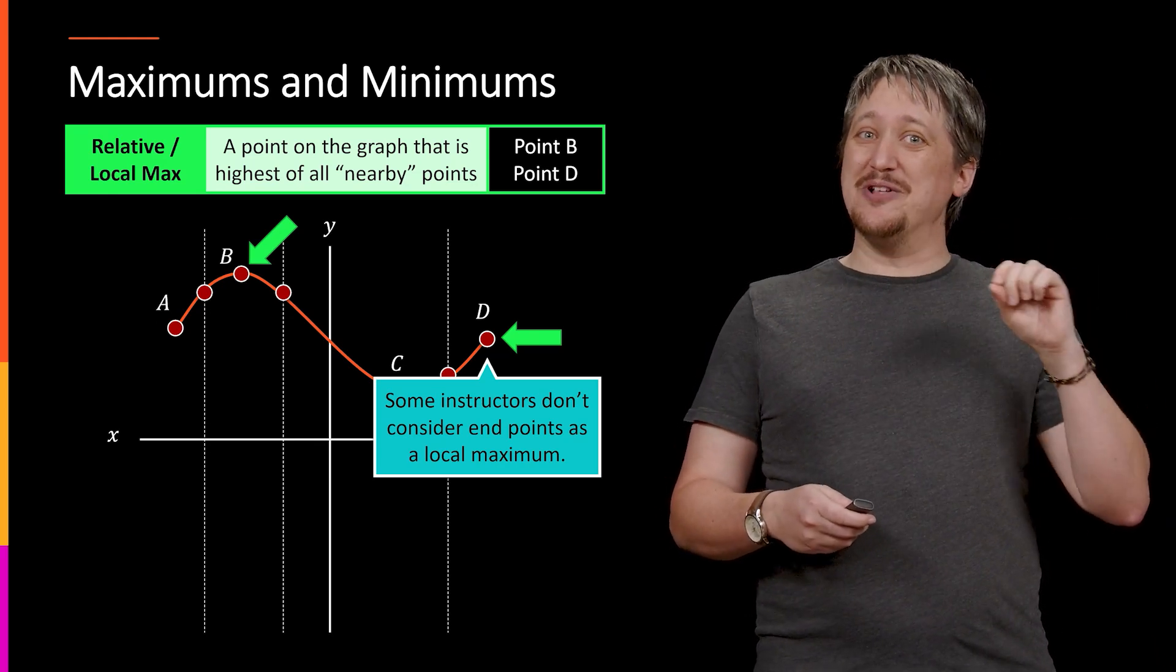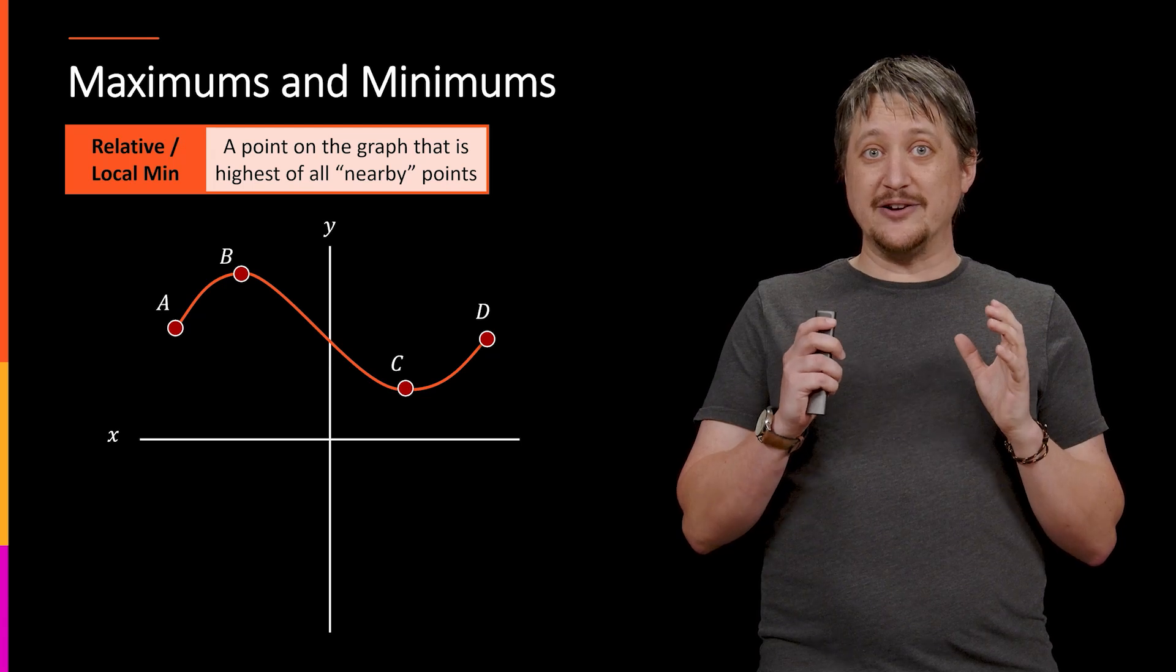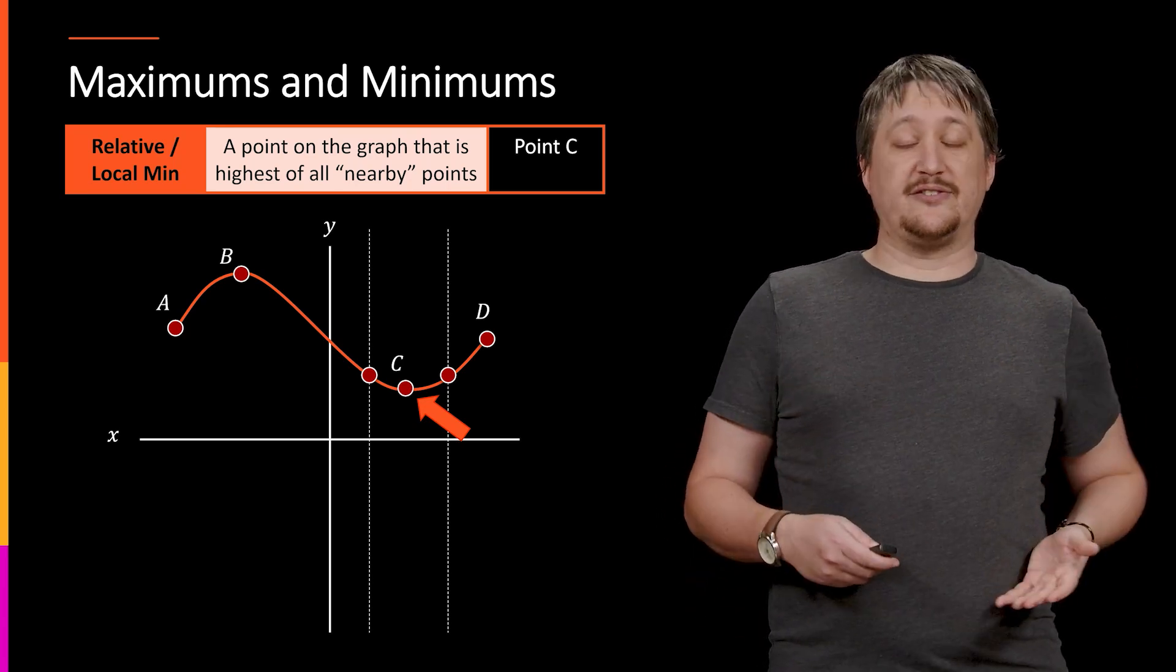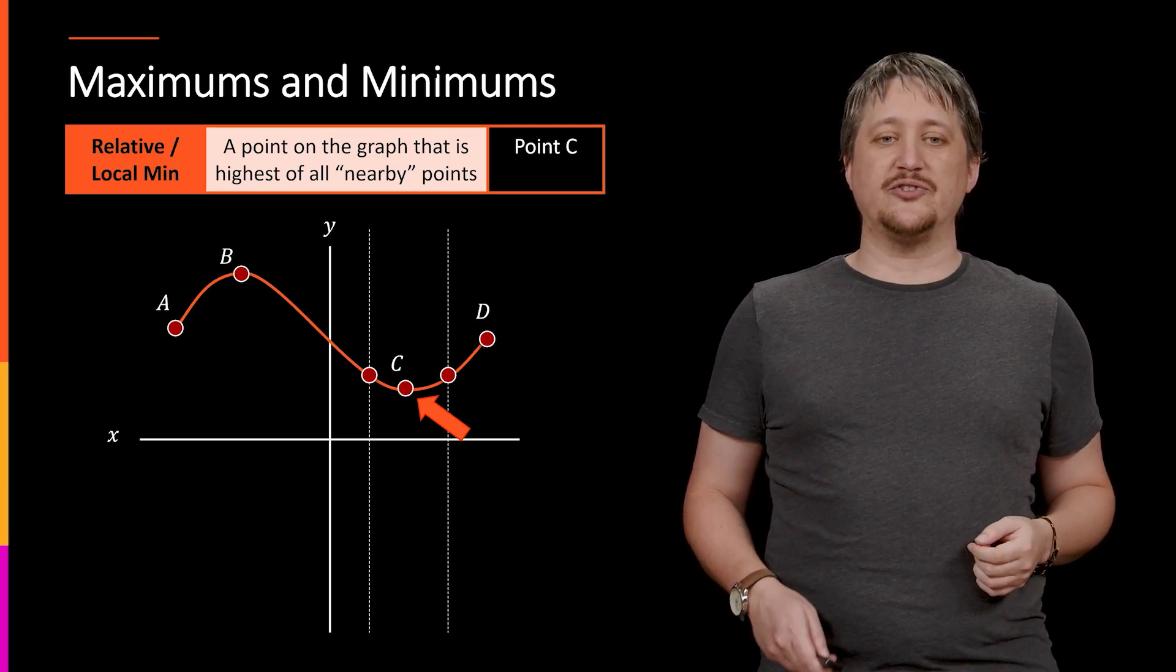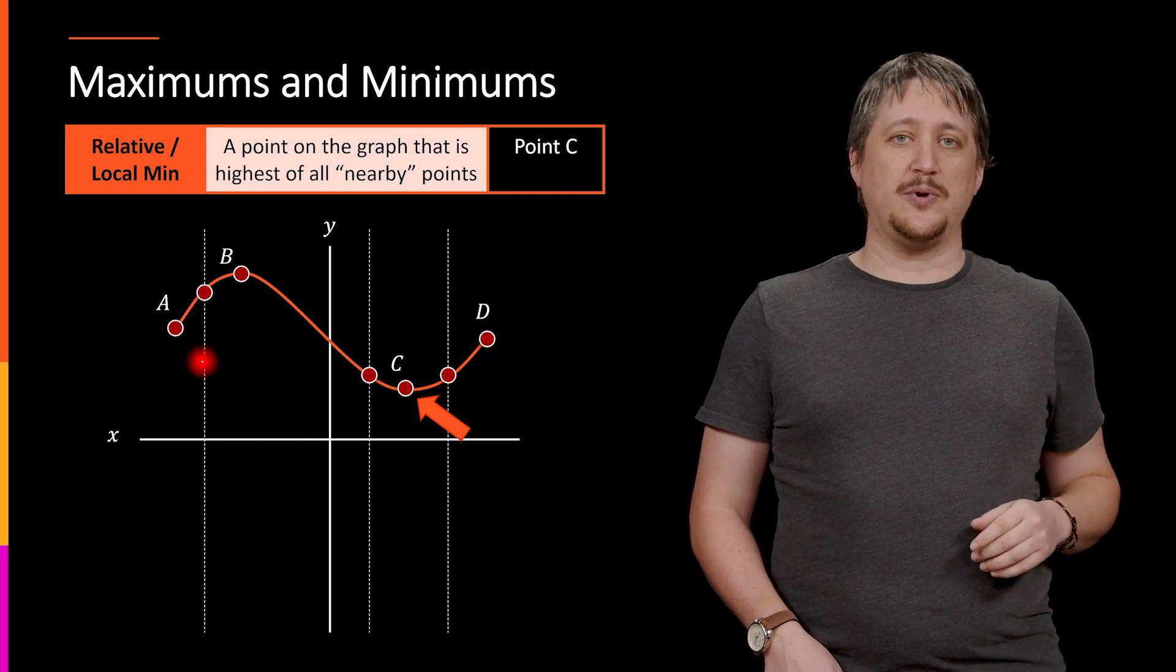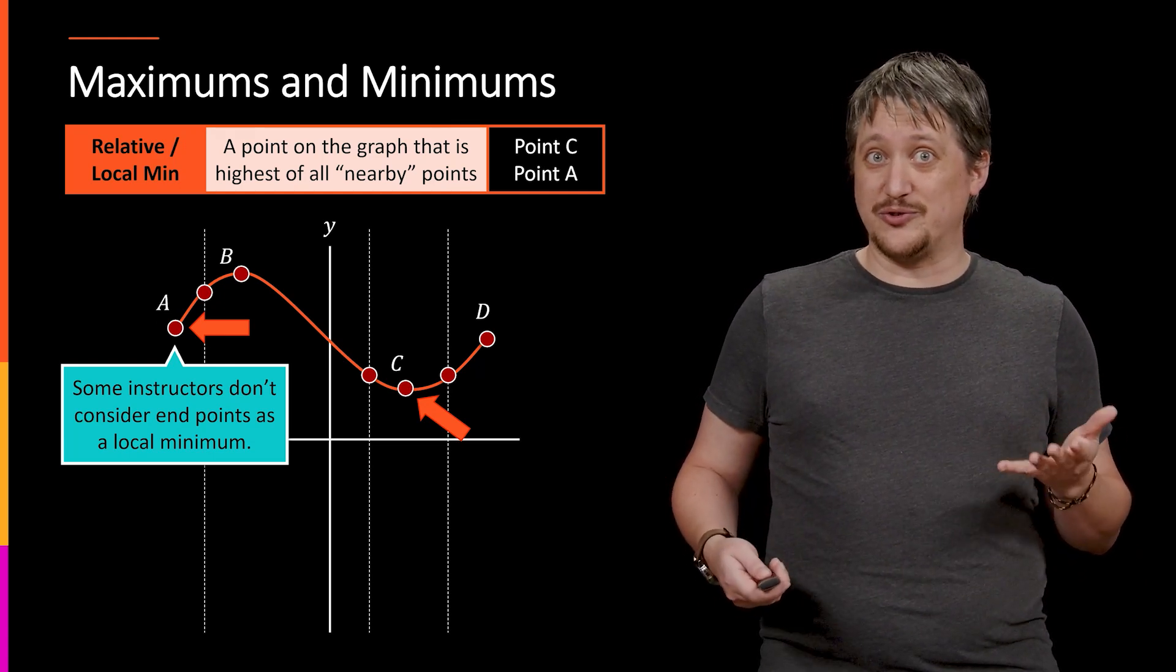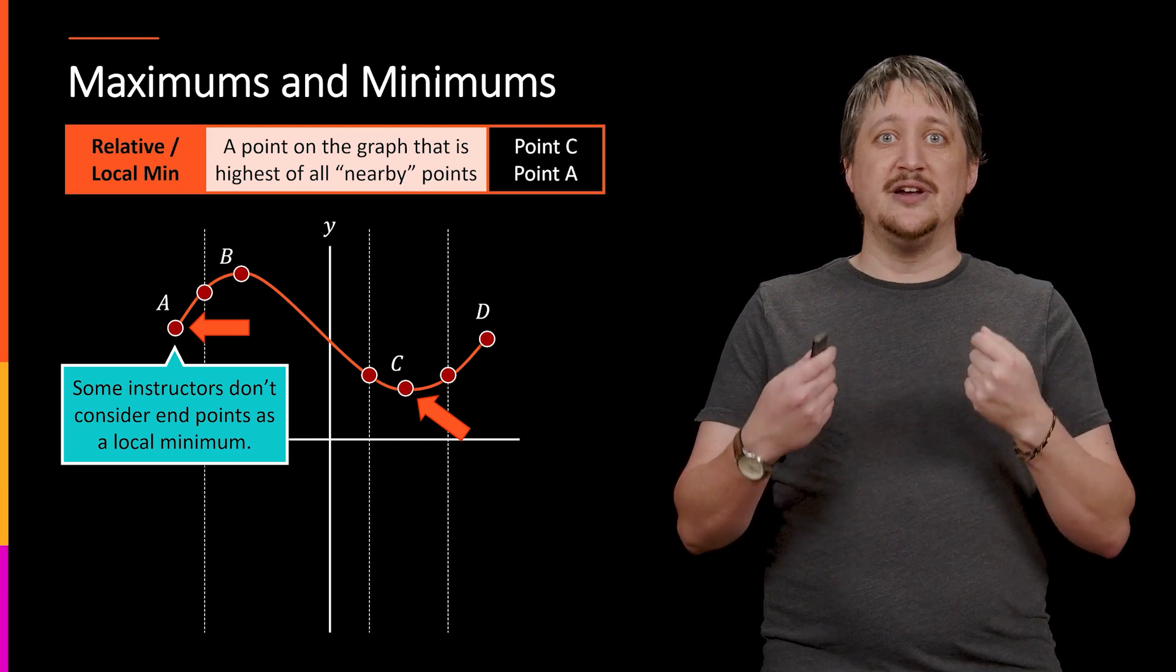All right. So with that notable asterisk out of the way, if we look at relative or local minimums, it's the same deal. I want to be able to look at some narrow area around it, like around C, for example, where C is the lowest value in that segment. So C being the lowest value in that segment, that's going to be a relative or local minimum. And likewise, because I am counting endpoints as being possible relative extrema, A could also be considered one of these relative or local minimums. Just like we said before, some instructors don't count endpoints as either one of the local extrema. They don't count them as local maximums. They also don't count them as local minimums. So when in doubt, ask the person teaching the class whether they count endpoints.